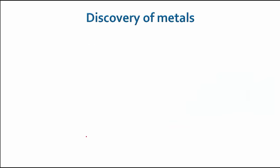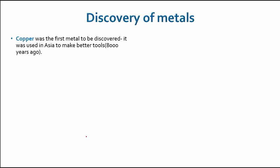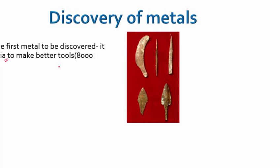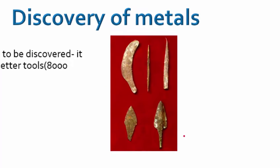If we look at the discovery of metal, the first metal to be discovered was copper. It was used widely in Asia to make better tools about 8,000 years ago. These are simple copper tools that were carved out and used for hunting and various other purposes.